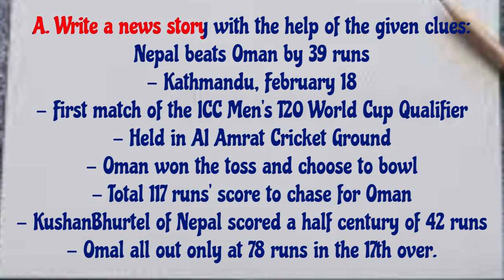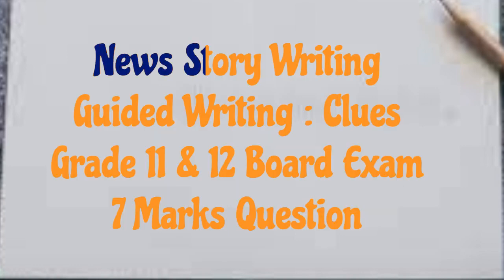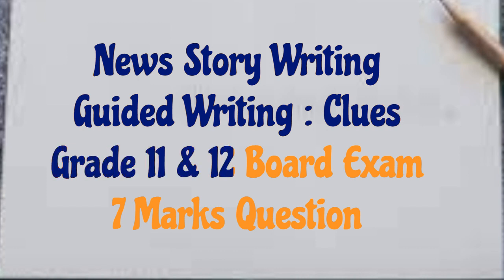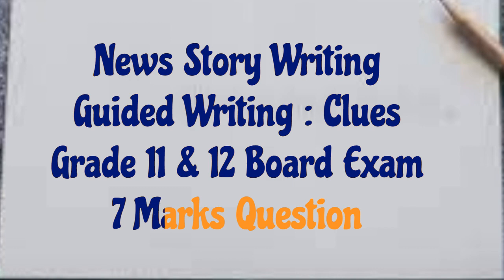Example: Write a news story with the help of the given clues. Nepal beats Oman by 39 runs. Kathmandu, February 18. First match of the ICC Men's T20 World Cup qualifier. Held at Al-Amrath cricket ground. Oman won the toss and chose to bowl. Total 117 runs scored to chase for Oman. Kushal Bhurtel of Nepal scored a half century of 42 runs. Oman all out only at 78 runs in the 17th over. This is a guided writing where clues are given and we must prepare the news story based on them. It appears as a seven-mark question in the grade 11 or 12 exam.